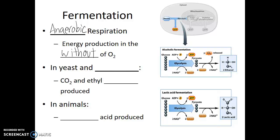Different types of organisms will approach fermentation, or anaerobic respiration, in different ways. In yeast and bacteria, the most common form is through what's called alcoholic fermentation. In this process, glucose is broken down during glycolysis into pyruvate, as we would normally see. But then that pyruvate, instead of being broken down into carbon dioxide, is converted into ethyl alcohol.